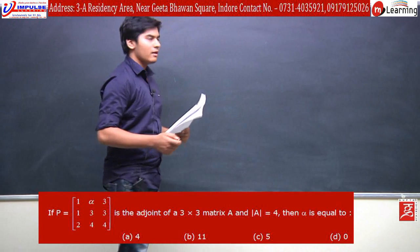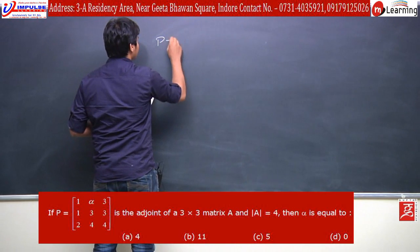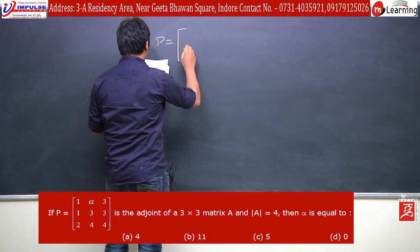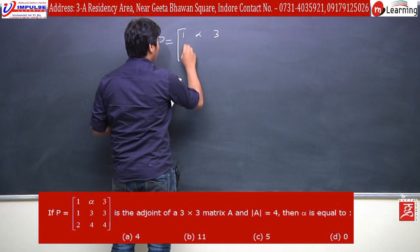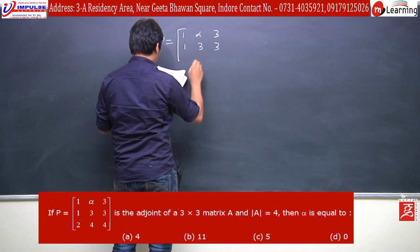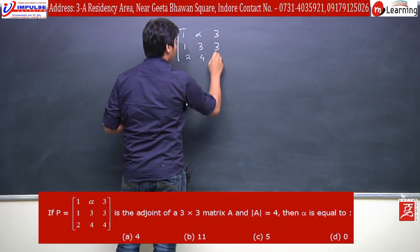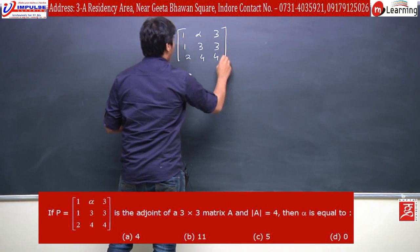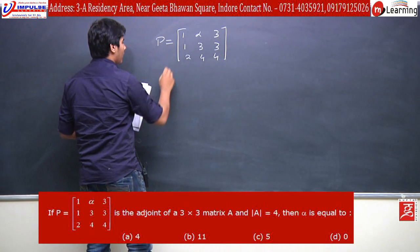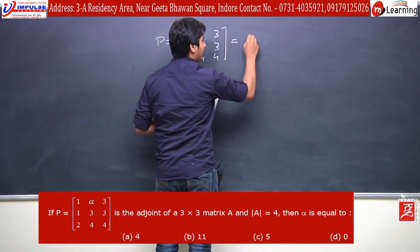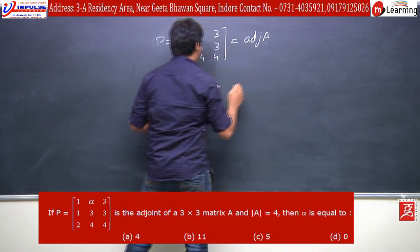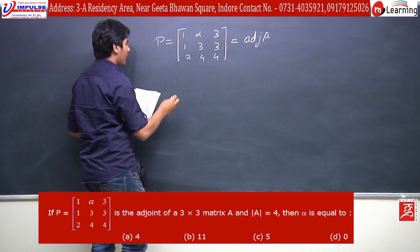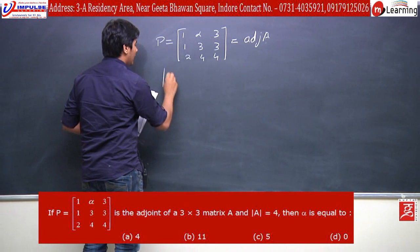We have matrix P given, which is 1 alpha 3, 1 3 3, 2 4 4. We have given that P is equal to adjoint A, and we have one information given that determinant A is equal to 4.